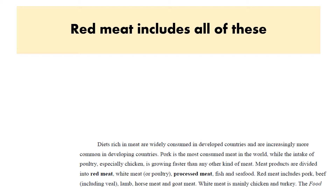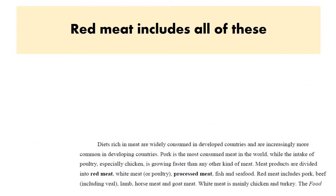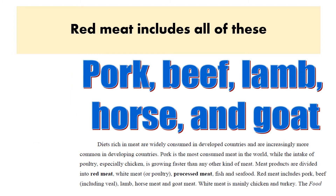Red meat includes pork, beef, lamb, horse, and goat meat. Be familiar with red meat, processed meat, and white meat — what is the definition and what are the examples?